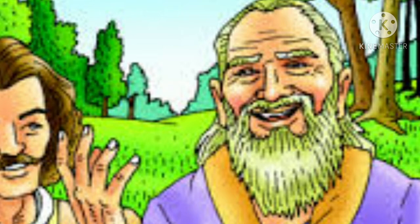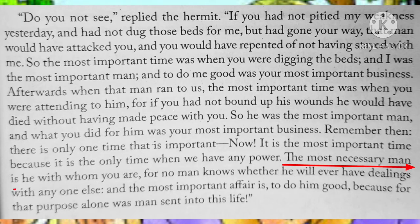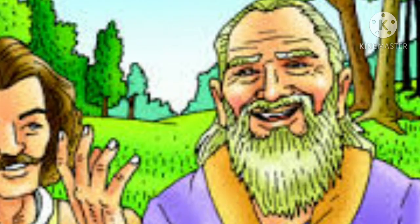So this is the answer the Tsar gets for his first question: what is the most important time? According to the hermit, the most important time is now. And to his second question, the hermit tells the Tsar that the most important or most necessary person is he with whom you are — your present companion.